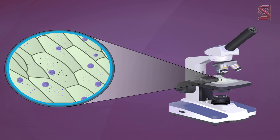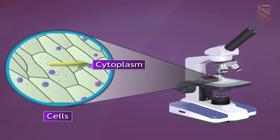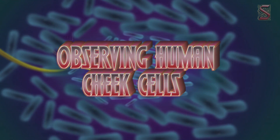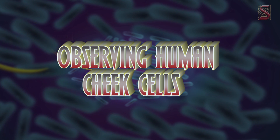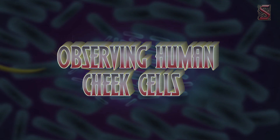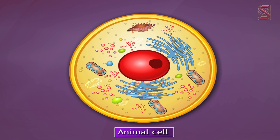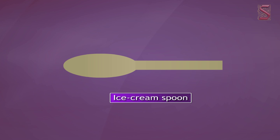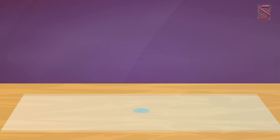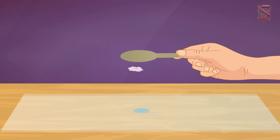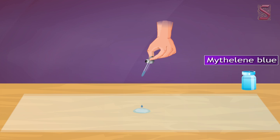Small chamber-like structures called cells can be observed. Each cell contains a prominent vacuole, nucleus, and cytoplasm. Now let's look at an animal cell. We'll begin with an ice cream spoon to scrape the inside of the cheek.